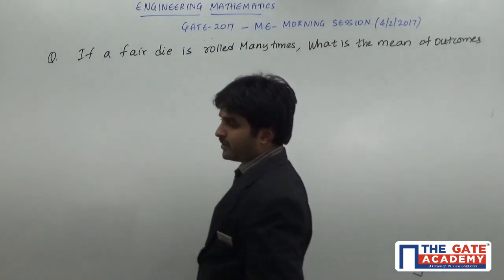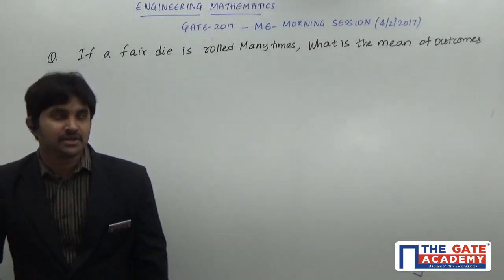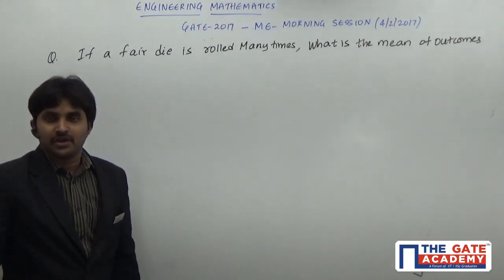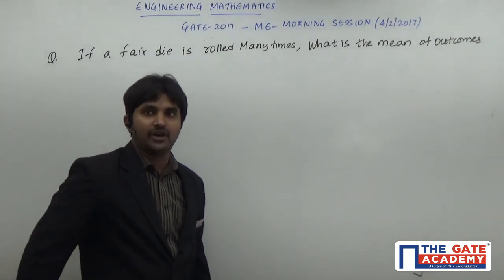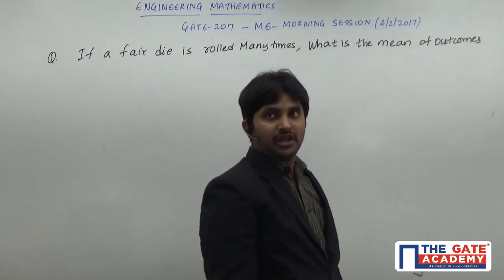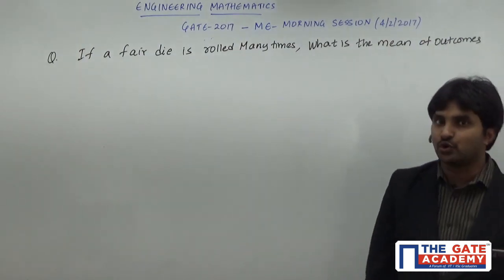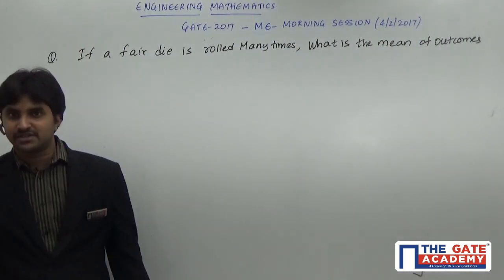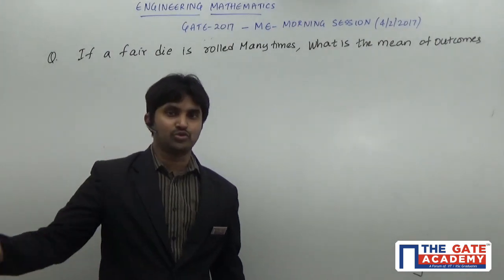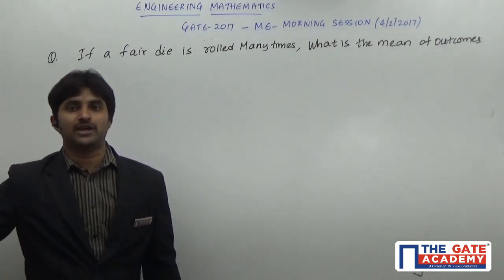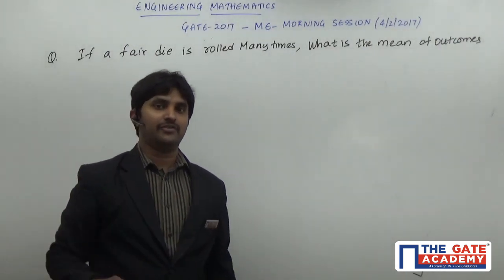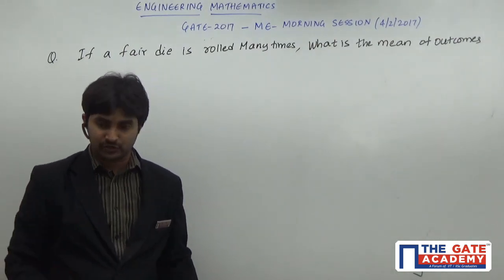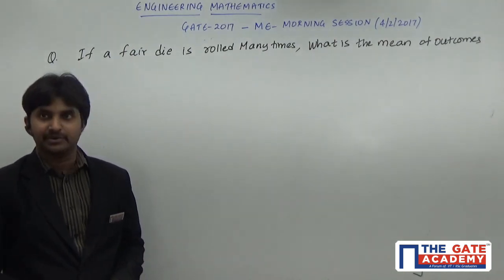If a die is rolled many times, what is the mean of the outcomes? We have to find the mean of the outcomes given that the die is rolled many times. So many times means it is going to be 1 time, 2 times, 3 times... and we are not sure about what the meaning is — it can be infinite also. It is a very big number.